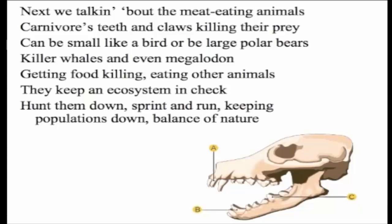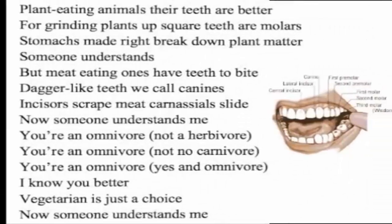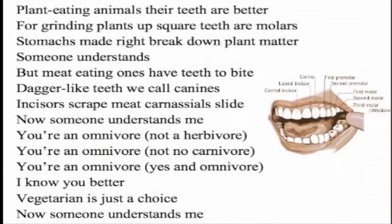Now talking about meat-eating animals — carnivores use teeth and claws to kill their prey. They can be small like a bird, or large like bears, killer whales, and even the megalodon. Getting food by killing and eating other animals, they keep an ecosystem in check.